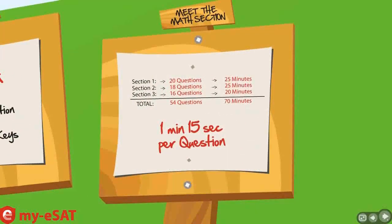On every SAT, there will be three graded math sections. The first two sections are 25 minutes each. The last section is 20 minutes. So when you count it up, there are 70 minutes total and 54 questions total in these three sections.